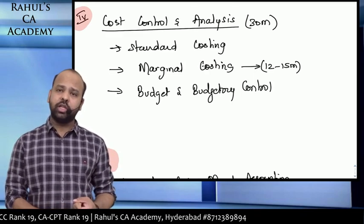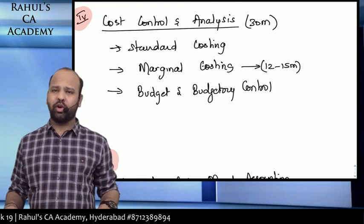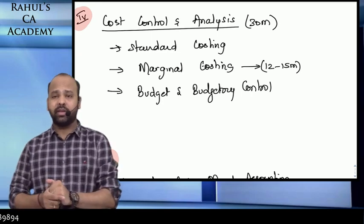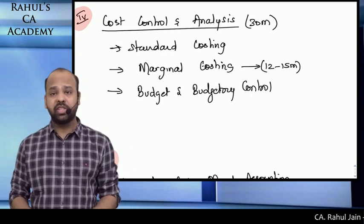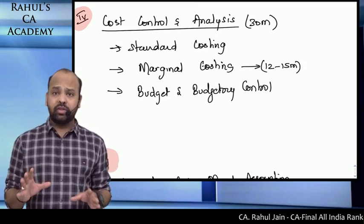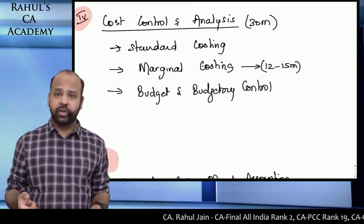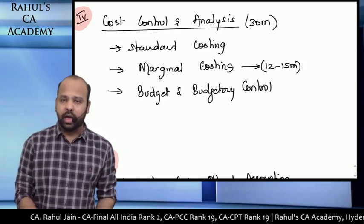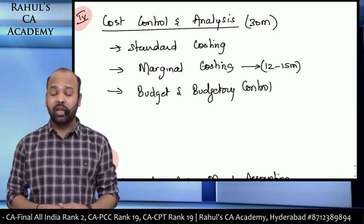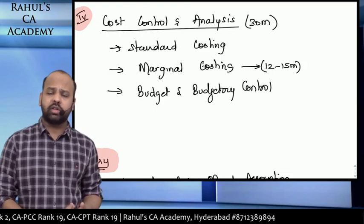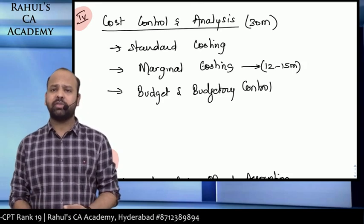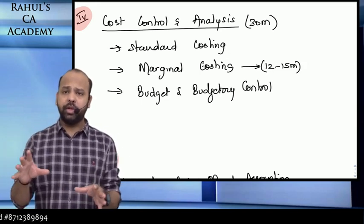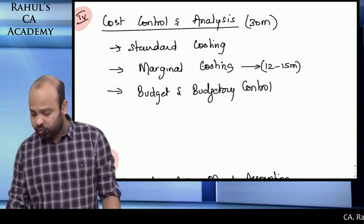The last heading in the syllabus is Cost Control and Analysis, comprising standard costing, marginal costing, and budgetary control. Marginal costing is undoubtedly the most important — it fetches an average of 15 marks, with 10 marks for sure. The other question can be from standard costing or budgetary control. Do not think you can leave all three topics entirely, because marginal costing or standard costing also appears as part of the compulsory question. Similarly, either material or labor comes in the compulsory question, and one question from methods of costing appears there too.